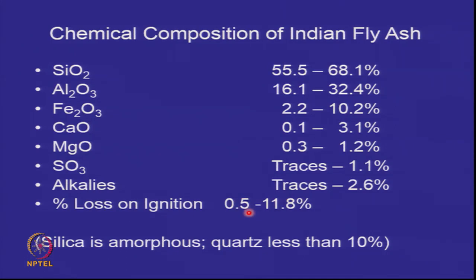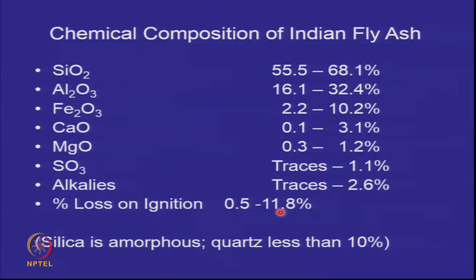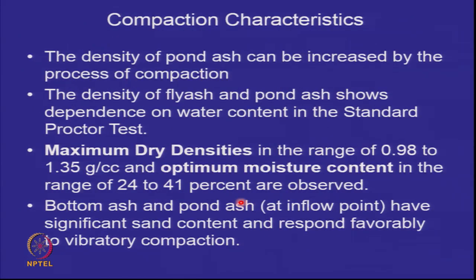Sometimes coal contains sulfur, so burning it produces sulfates. There can also be unburnt carbon in the coal, so even after getting the ash, if you burn that ash, it means not all the coal was burnt — sometimes you will have as much as 10 to 11 percent loss on ignition. This is not good quality ash; we would like loss on ignition to be as low as possible.